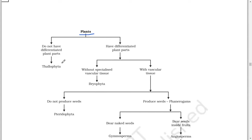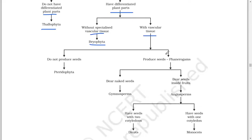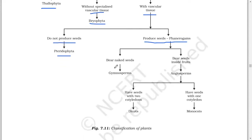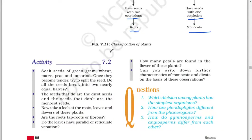Plants are of two types: those that do not have differentiated plant parts (Thallophyta) and those that have differentiated plant parts. Those with differentiated parts are of two types: without specialized vascular tissue (Bryophyta) and with vascular tissue. Those with vascular tissue are of two types: those that do not produce seeds (Pteridophyta) and those that produce seeds (Phanerogams). Phanerogams are of two types: those bearing naked seeds (Gymnosperms) and those bearing seeds inside fruit (Angiosperms). Angiosperms are of two types: those with seeds having two cotyledons (dicots) and those with seeds having one cotyledon (monocots). This is the classification of plants.